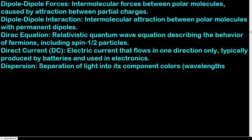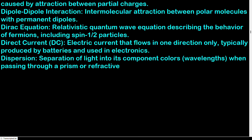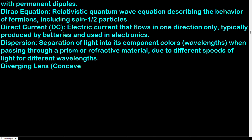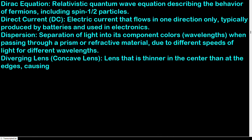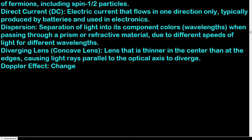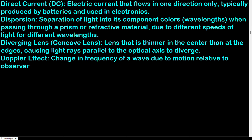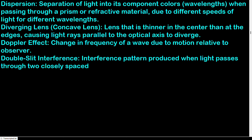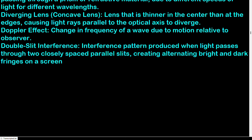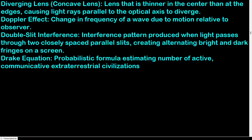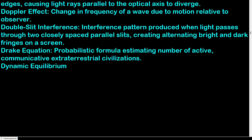Dispersion: separation of light into its component colors/wavelengths when passing through a prism or refractive material, due to different speeds of light for different wavelengths. Diverging lens (concave lens): lens that is thinner in the center than at the edges, causing parallel light rays to diverge. Doppler effect: change in frequency of a wave due to motion relative to an observer. Double-slit interference: interference pattern produced when light passes through two closely spaced parallel slits, creating alternating bright and dark fringes on a screen.